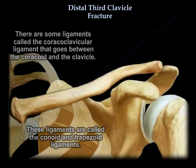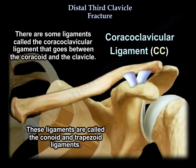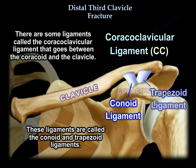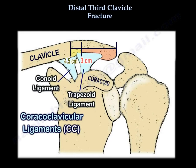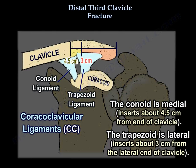There are some ligaments called the coracoclavicular ligament. It goes between the coracoid and the clavicle, and it has components called the conoid and trapezoid ligaments. The conoid is medial and is about 4.5 centimeters from the end of the clavicle, and the trapezoid ligament is lateral and is about 3 centimeters from the lateral end of the clavicle.